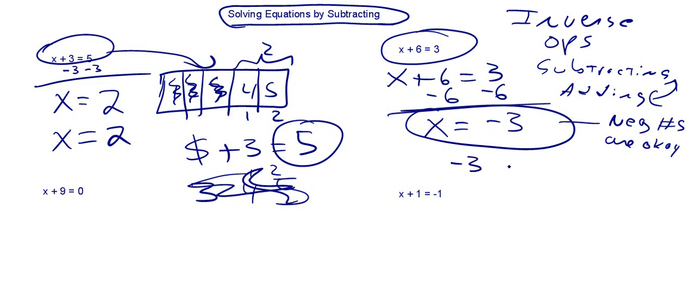And this works, so you take negative 3 plus 6, and that is equal to 3.